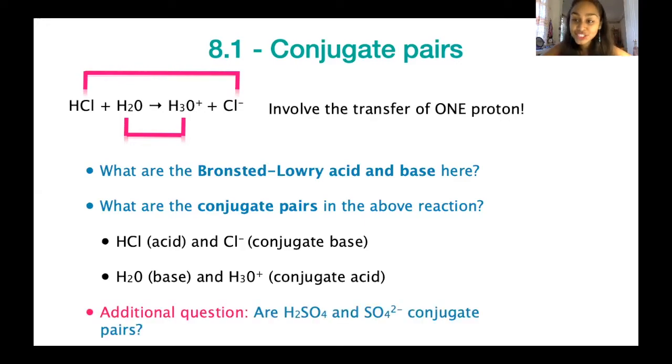I've got an additional question for you. Are H2SO4 and SO42- conjugate pairs then? H2SO4 is sulfuric acid, and SO42- is a derivative of sulfuric acid. The answer to this question is no. They are not conjugate pairs, because even though H2SO4 has lost two protons to become SO42-, it doesn't fit our definition of a conjugate pair. Remember, a conjugate pair can only involve the transfer of just one proton.